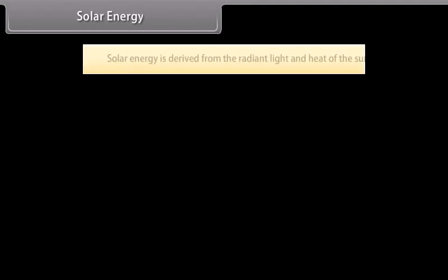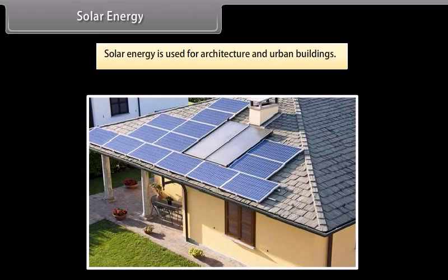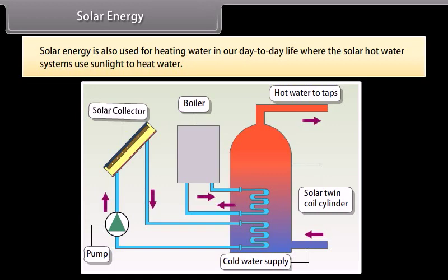Solar energy. Solar energy is derived from the radiant light and heat of the sun and has been used by humans since ancient times for a range of technologies. Solar energy is used for architecture and urban buildings. It is also used for heating water in day-to-day life, where solar hot water systems use sunlight to heat water. In low geographical latitudes, domestic hot water usage is provided with temperatures up to 60 degrees Celsius by solar heating systems. The most common types of solar water heaters are evacuated tube collectors, glazed flat plate collectors for domestic hot water, and unglazed plastic collectors used mainly to heat swimming pools.